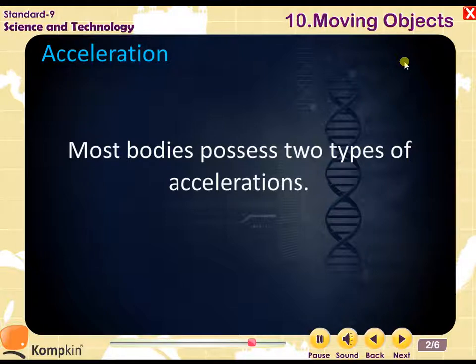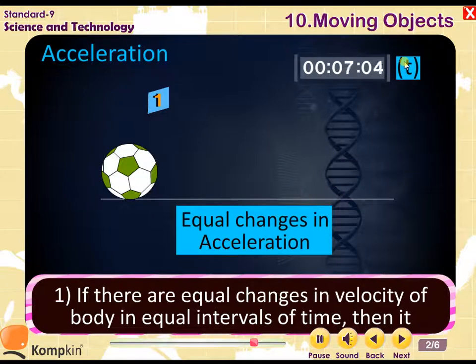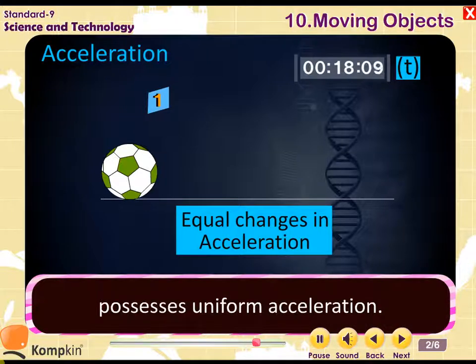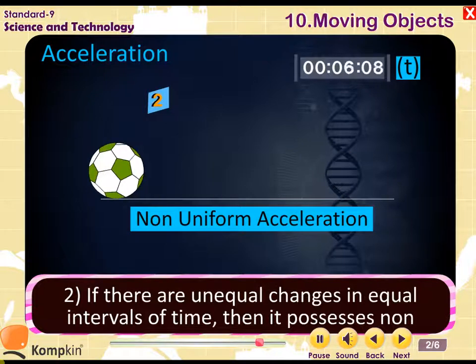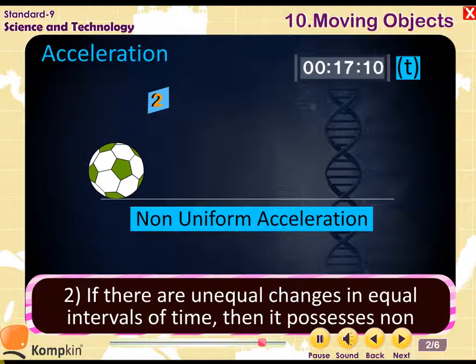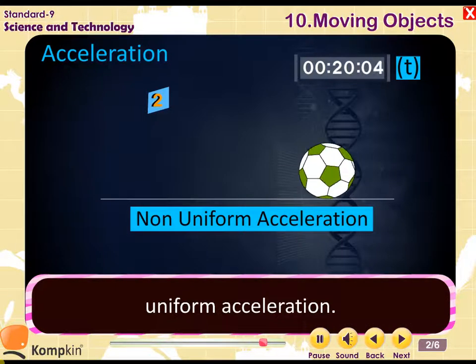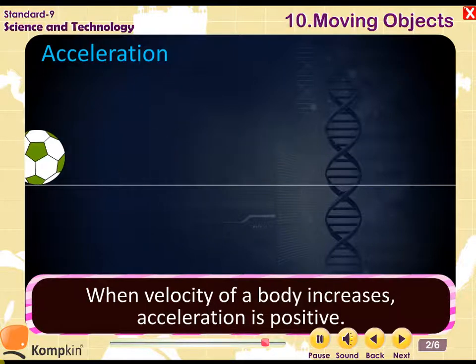Most bodies possess two types of accelerations. 1. If there are equal changes in velocity of body in equal intervals of time, then it possesses uniform acceleration. 2. If there are unequal changes in equal intervals of time, then it possesses non-uniform acceleration.